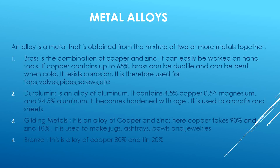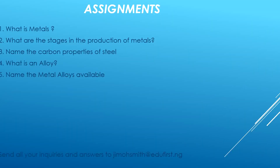Bronze is an alloy of copper where copper takes 80 percent and tin takes 20 percent. Finally, students, here are your assignments: one — what is metal? Two — what are the stages in the production of metals? Three — name the carbon properties of steel. Four — what is an alloy? Five — name the metal alloys available. You can send all your inquiries and answers to the contact provided. Thank you.